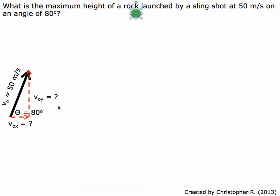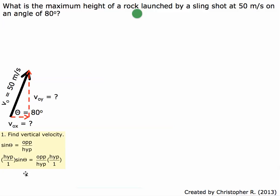To find the maximum height, we've got to do a couple of steps first. First, we have to find the velocity in the vertical direction. We're going to use the trig function sine equals opposite over hypotenuse. We have the hypotenuse and the angle of 80 degrees, but we're looking for the opposite side. Isolating the opposite gives us: opposite equals hypotenuse times sine of the angle. Plugging in our numbers: 50 meters per second times sine of 80 degrees gives us an initial vertical velocity of 49.24 meters per second.